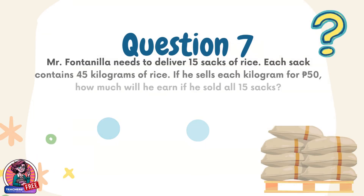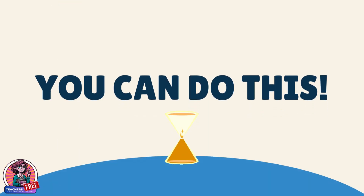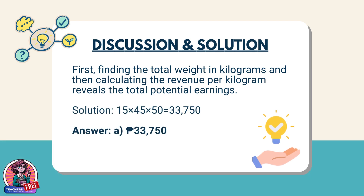Question 7. Mr. Fontanilla needs to deliver 15 sacks of rice. Each sack contains 45 kilograms of rice. If he sells each kilogram for 50 pesos, how much will he earn if he sold all 15 sacks? Choices: A. 33,750 pesos, B. 35,000 pesos, C. 30,500 pesos, D. 25,000 pesos. Discussion: First, finding the total weight in kilograms and then calculating the revenue per kilogram reveals the total potential earnings. Solution: 15 × 45 × 50 = 33,750. Answer: A. 33,750 pesos.